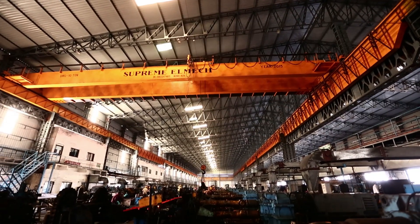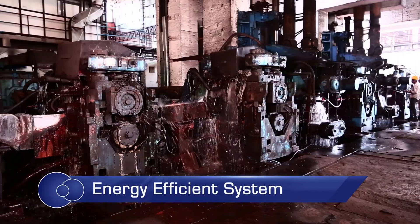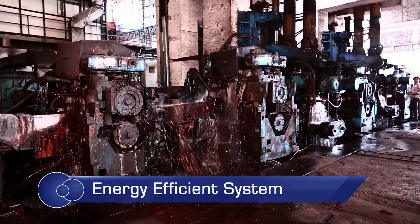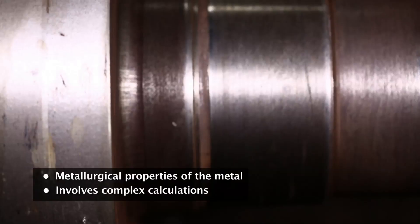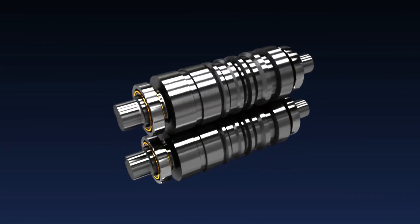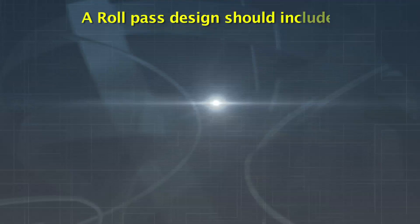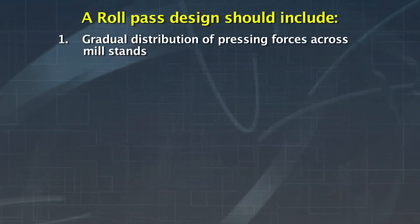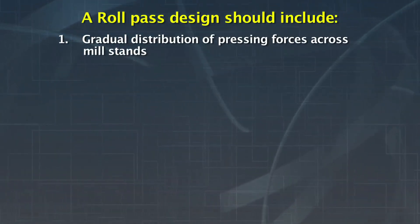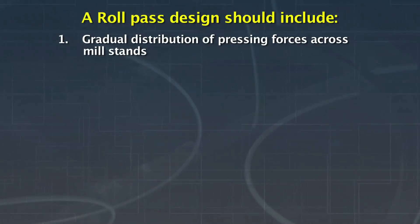An energy efficient method of determining a roll pass design for a long product mill is to use computerized computation. A roll pass design is based on the metallurgical properties of the metal and involves complex calculations. Using a computerized roll pass design is an effective way of optimizing the process. An optimum roll pass design should include gradual distribution of pressing forces across mill stands, with highest reduction of charge in the roughing mill and lowest in the finishing mill.